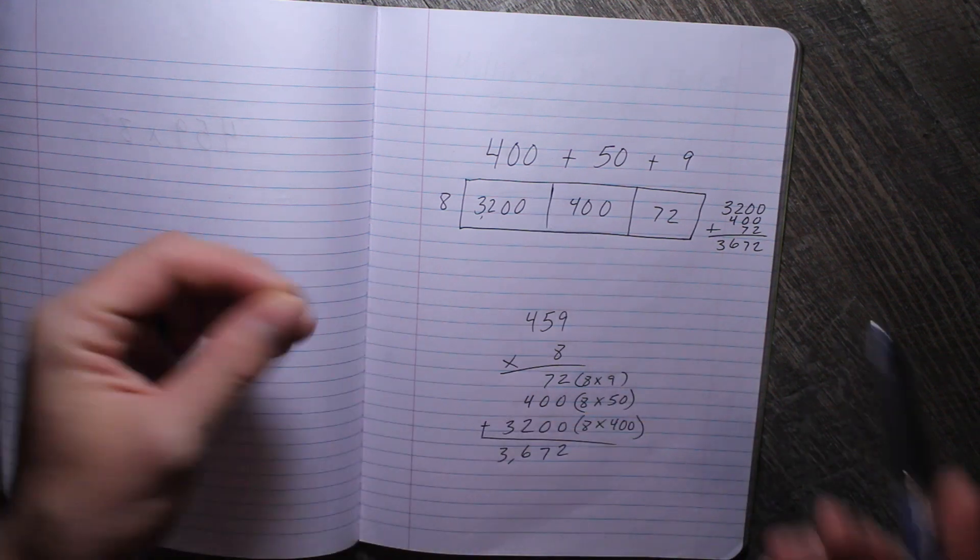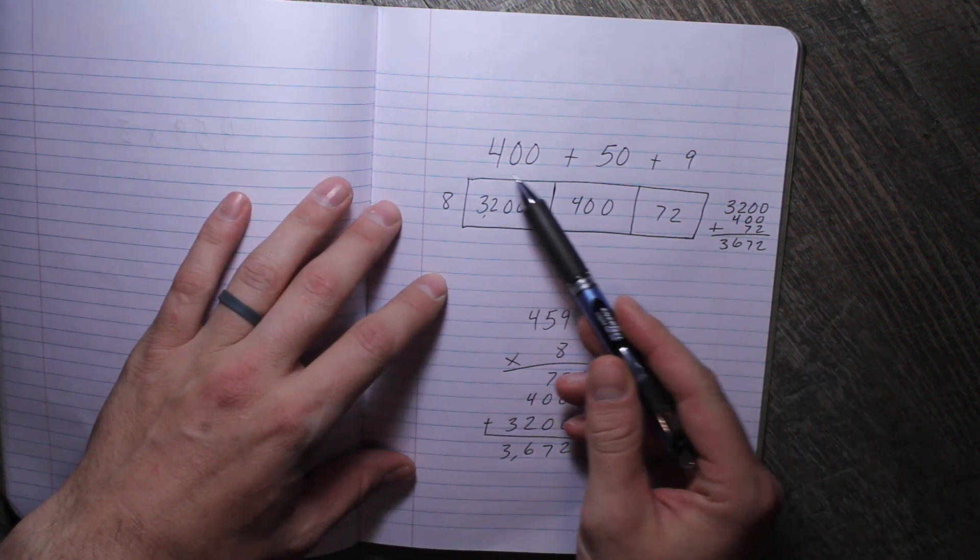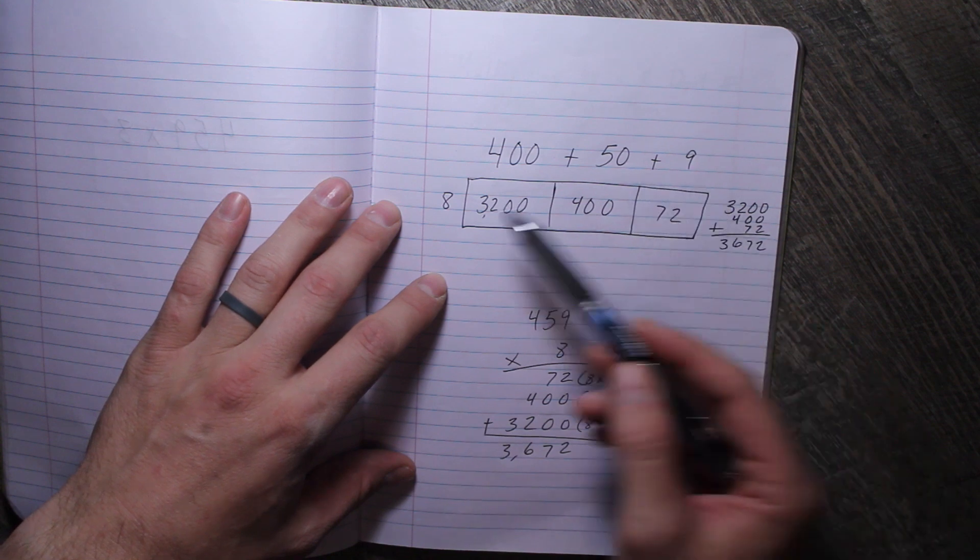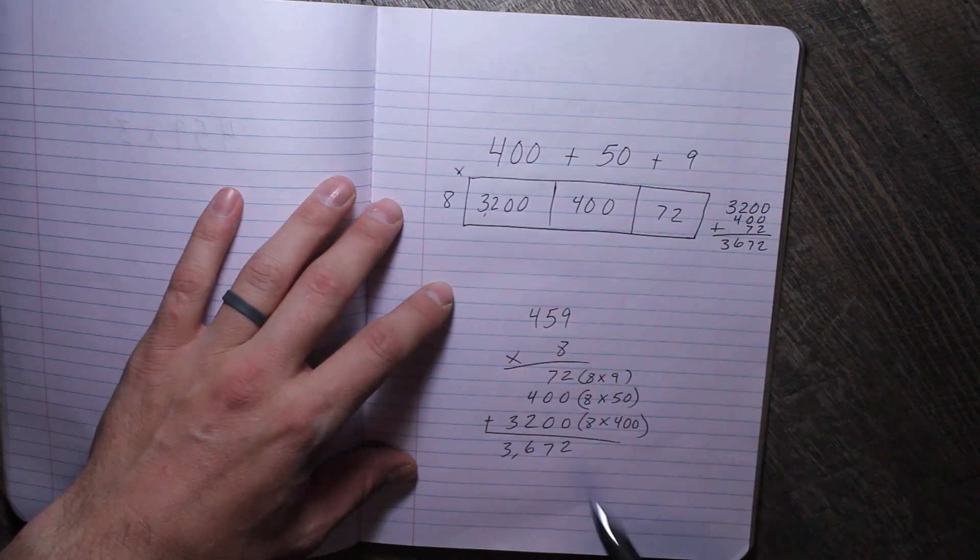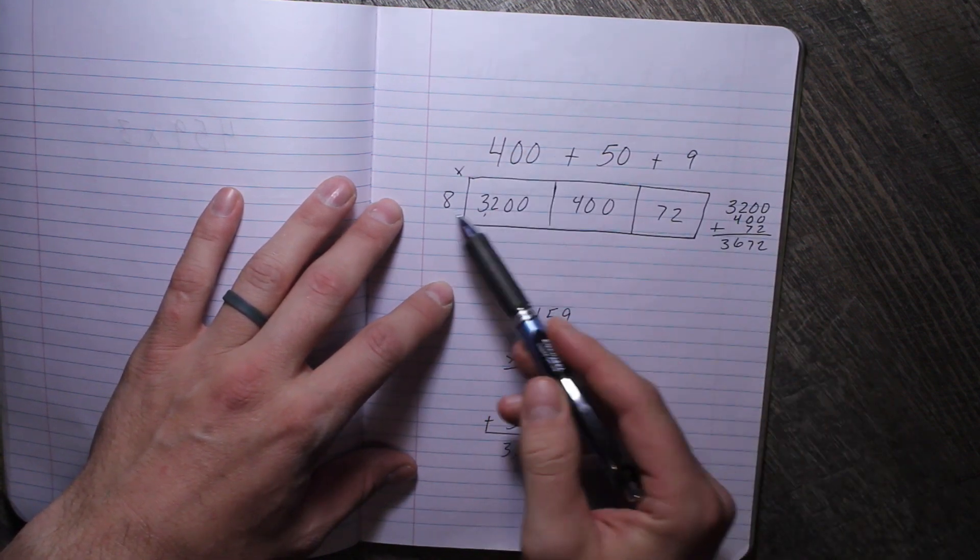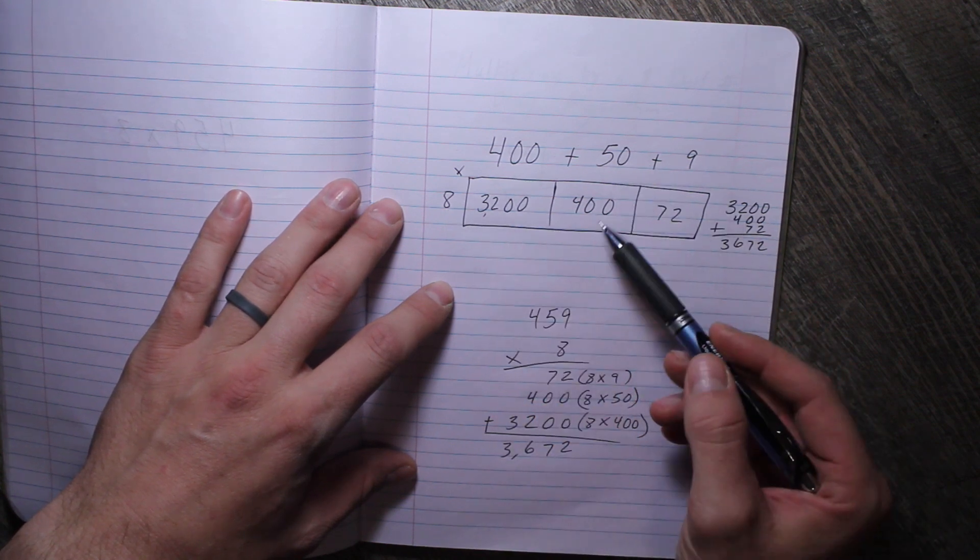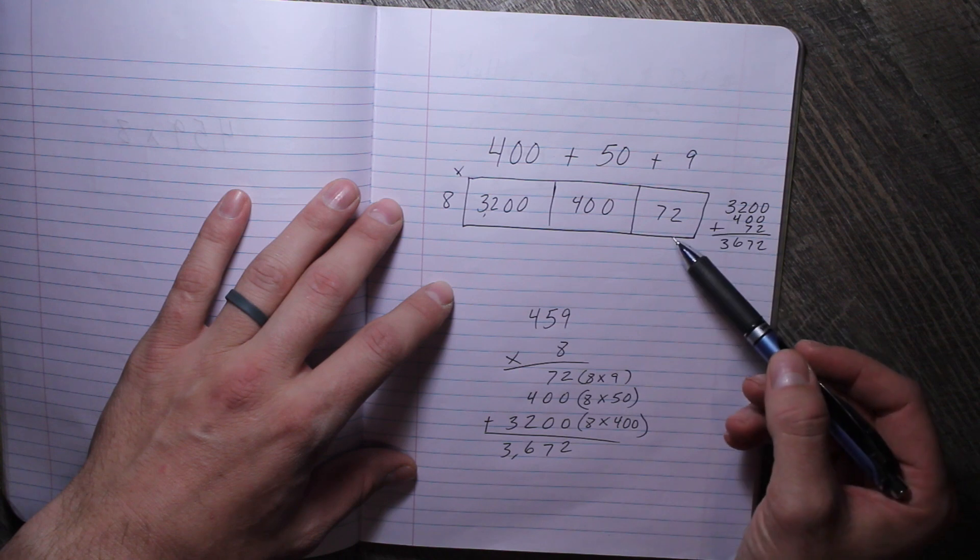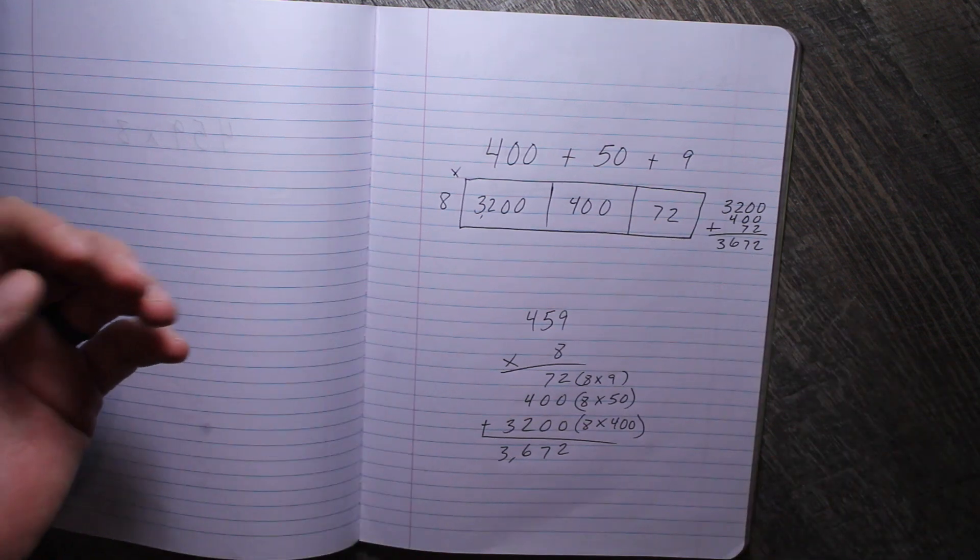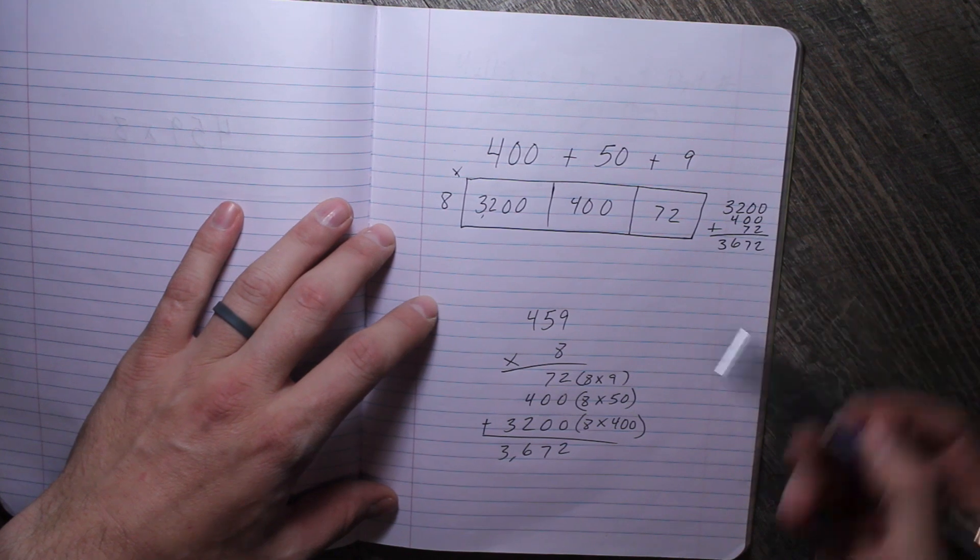So 400 plus 50 plus 9 times 8, and then you put them in the box. So 8 times 400 is 3200, 8 times 50 is 400, and 8 times 9 is 72. Then you add all of those up, which is great—it shows why it works.